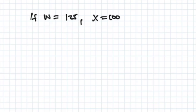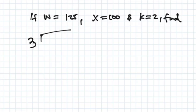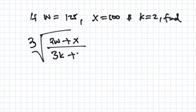So if w is 125, x is equal to 100, and k is 2, we are told to find the cube root of 2w plus x over 3k plus 1.